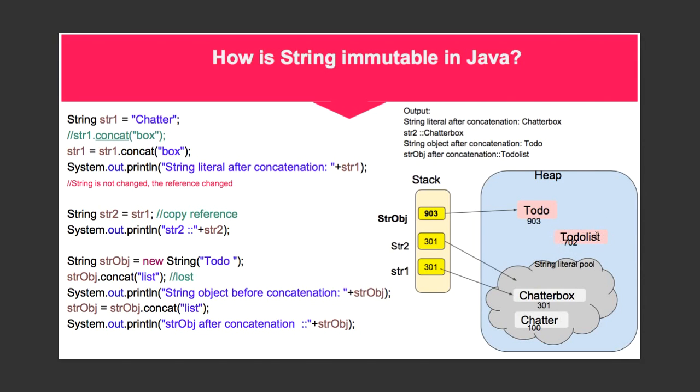However, in the next line we assign it to our previously created str obj, that is the string object. So we'll notice that string object, which was previously pointing to Todo at address 903, it will now start pointing to TodoList at address 702.